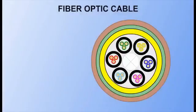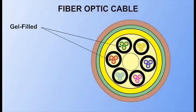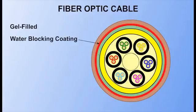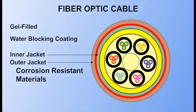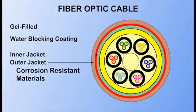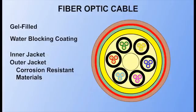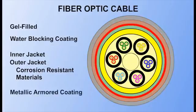Fiber cable that is used outdoors is normally filled with a waterproof gel. The buffer tubes may also contain this gel, as well as a water-blocking coating between the inner and outer jackets. Both inner and outer jackets are made of materials designed to resist corrosion and add greater protection to the cable. Some cables also have a metallic armored coating for strength and to protect against rodents.